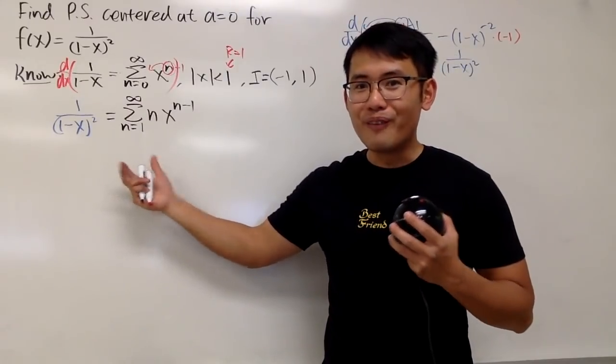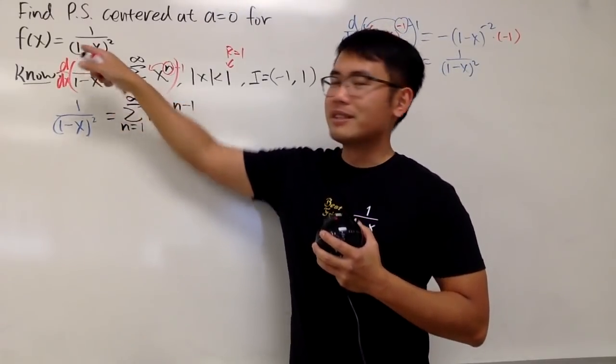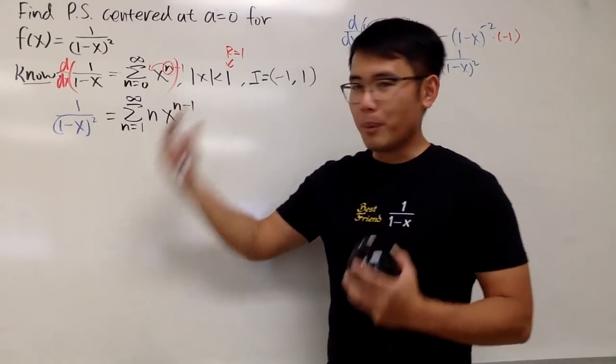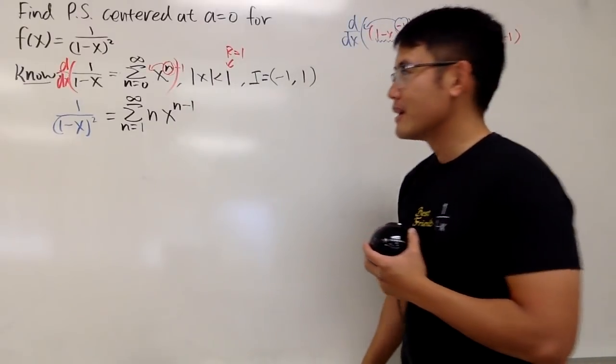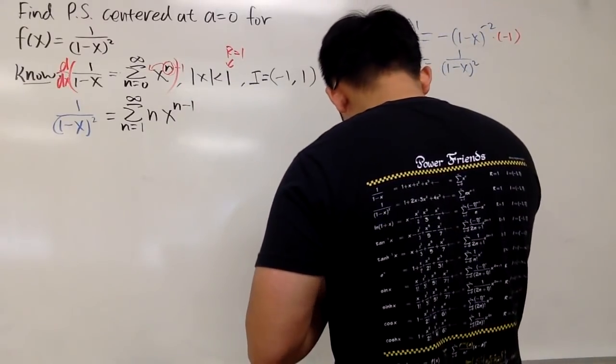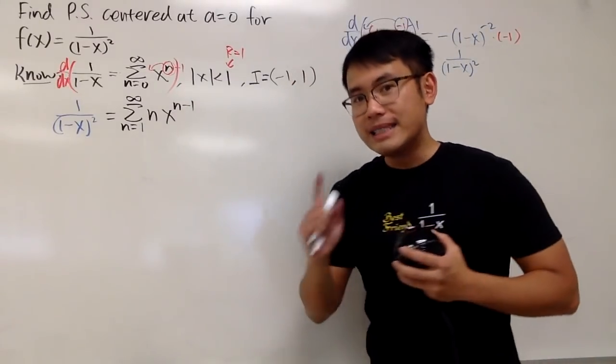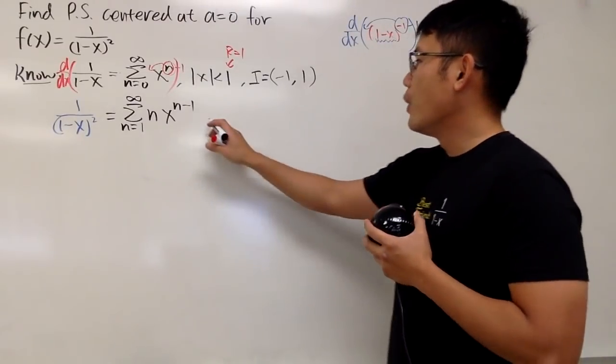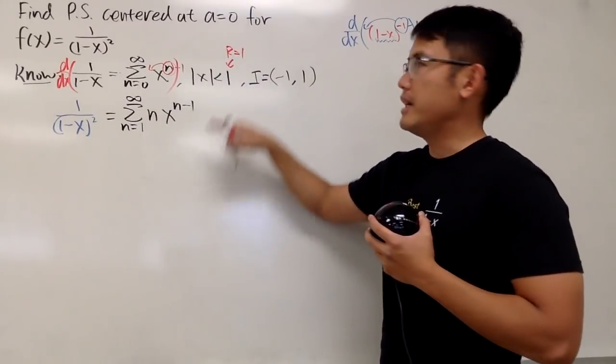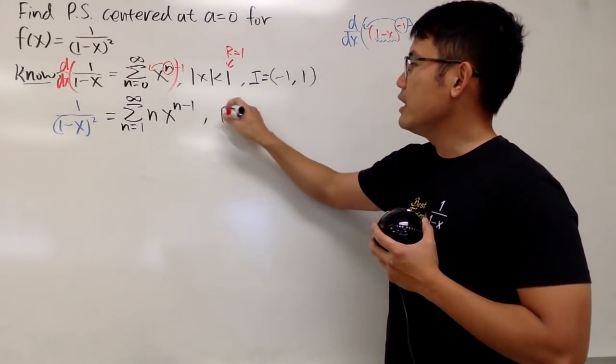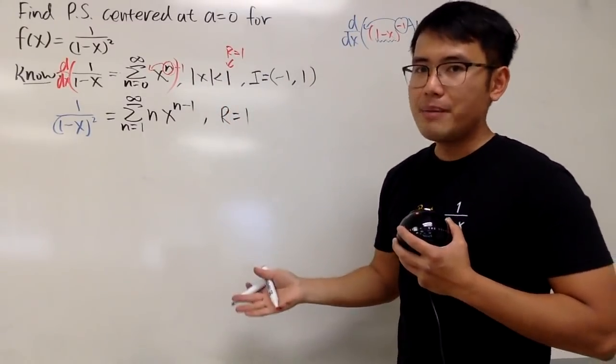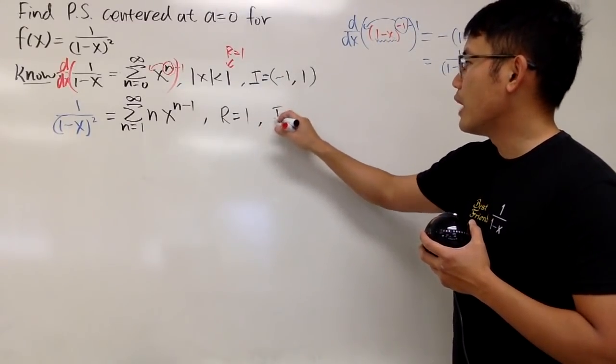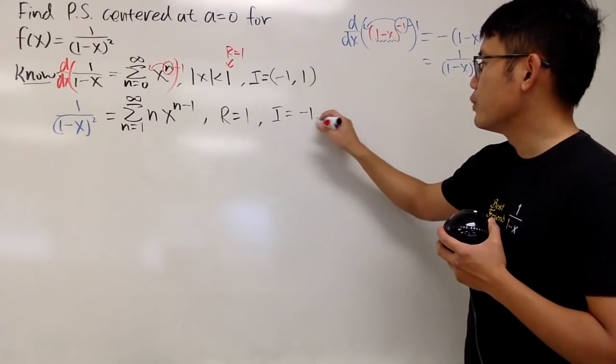By the way, this right here is the form of the power series for 1/(1-x)². This is like our best friend, and you power that up. What else can we do? I think we also need to get the r and the i. When we differentiate, the good thing is that the radius of convergence will stay the same, but we should double-check the interval of convergence. So i is going to be from -1 to 1.